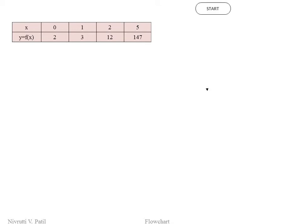Let's start with the start symbol. As per the given data, we need to input what is given in the problem statement — the number of data points n and the value of x denoted as xg. We draw a parallelogram symbol to take input from the user, which can also be used to print output. So input is n as number of data points and xg, the value of x at which we require to calculate yg.